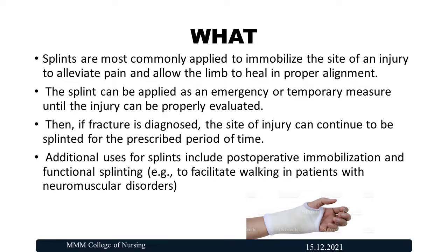Regarding what: splints are most commonly applied to immobilize the site of injury to alleviate pain. They are used as emergency and temporary measures. If a diagnosed site of injury is confirmed, splinting can continue for a particular period of time before surgery, and for post-operative immobilization. Functional splinting can also be done.